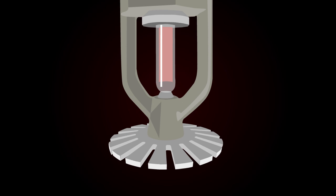A sprinkler is a simple but highly engineered device. The common features are a thermal element and the deflector, which are critical to the operation of the sprinkler.